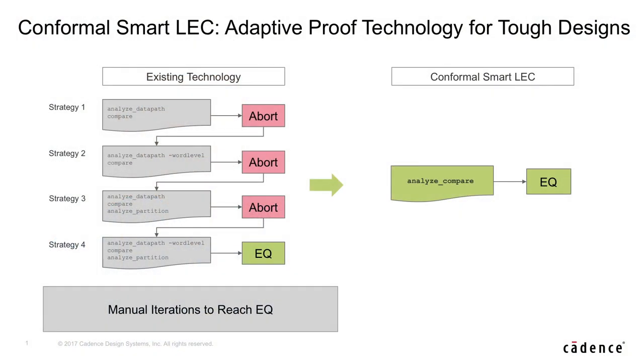With a single command, Smart Lag analyzes the design and executes the best strategy to complete the comparison. The strategy is different for different parts of the design, and the result is effectively a fine-grained strategy customization that is very difficult or nearly impossible to replicate manually.